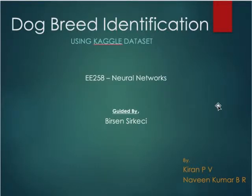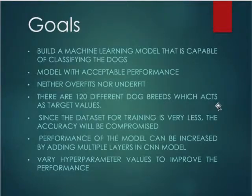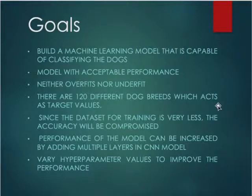Hello everyone. This is a presentation on building a machine learning model for dog breed identification using the Kaggle dataset. The objective of this project is to build a model capable of performing breed classification of dogs, with acceptable performance — that is, the model neither overfits nor underfits. The target is to classify 120 different types of dog breeds.